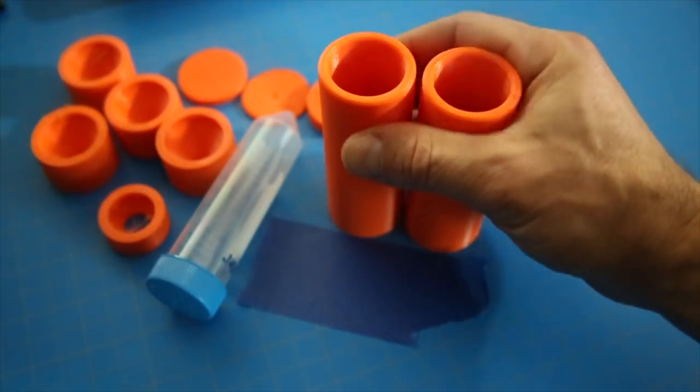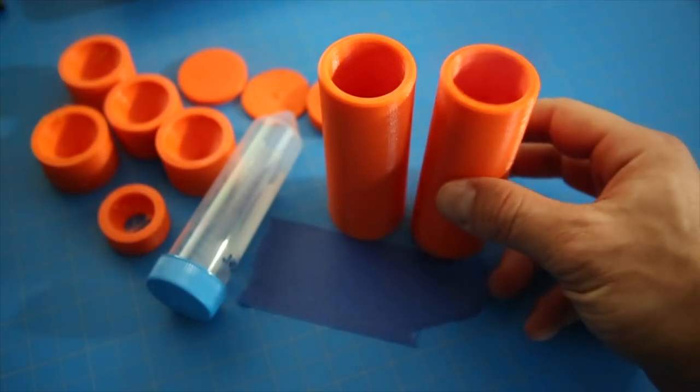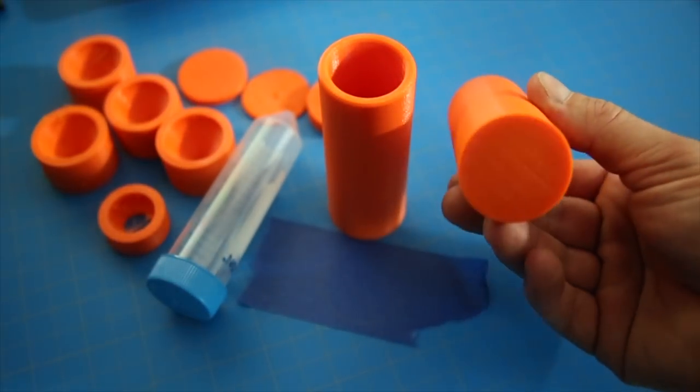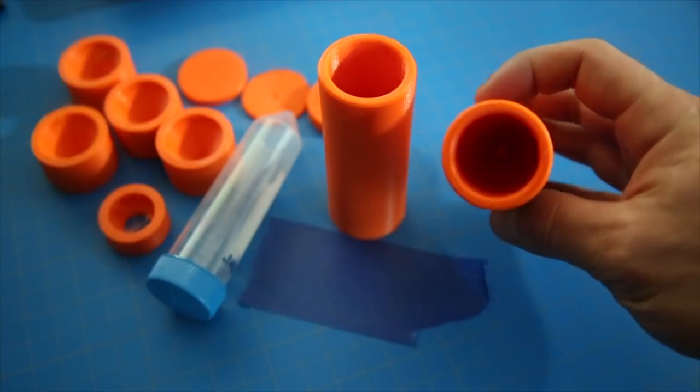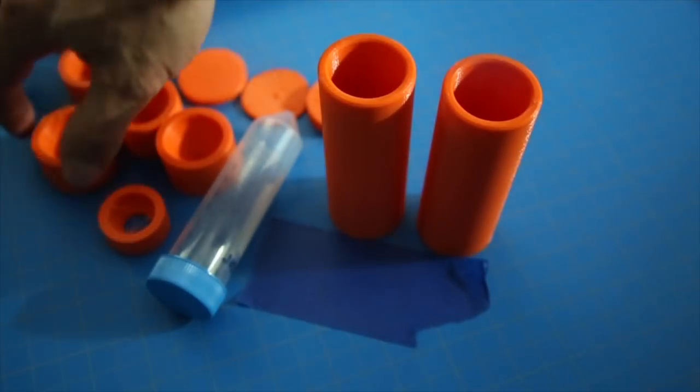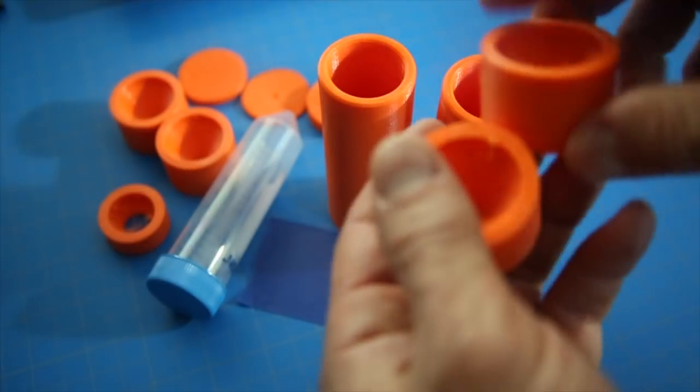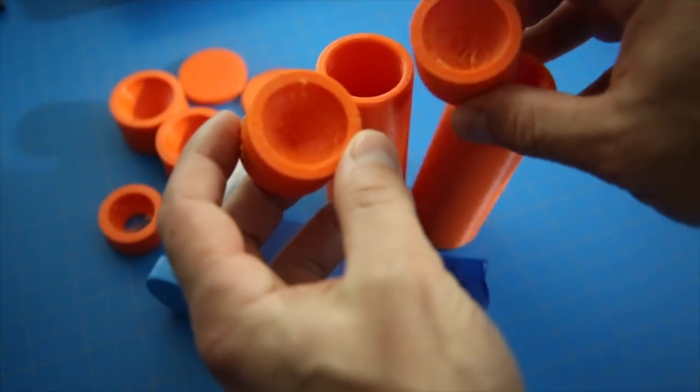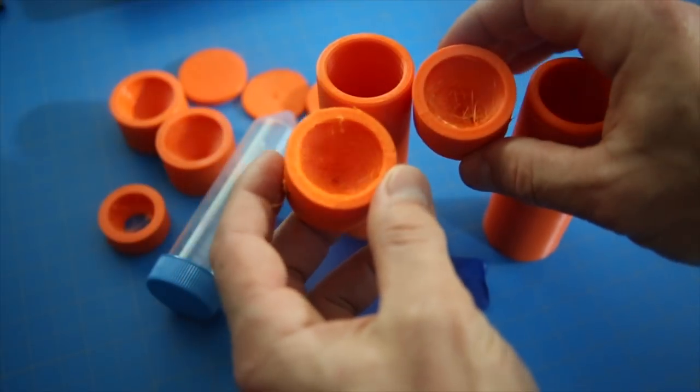As you can see, the finished adapters printed incredibly nicely with virtually zero stringing and what looks like exceptional layer adhesion. Although the layers are still visible and there is a slight texture to the surface, it is still 3D printing and very difficult to get a slick surface without some kind of chemical or heat processing after the print is finished.